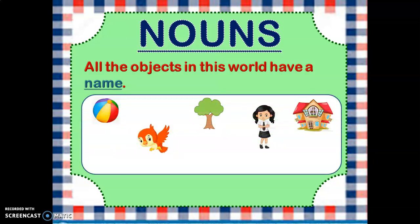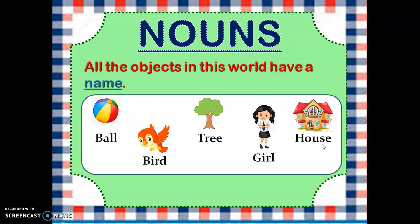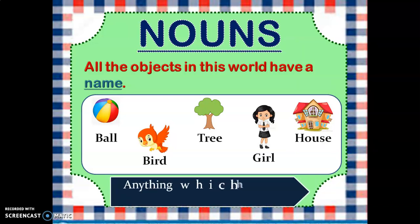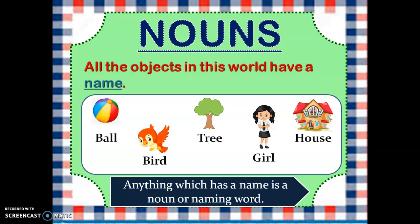Now look at a few objects. What do we call this object? A ball. Then the second one — a bird. Third one — a tree. Fourth one — a girl. And the last one is a house. So anything which has a name is a noun, or a naming word.